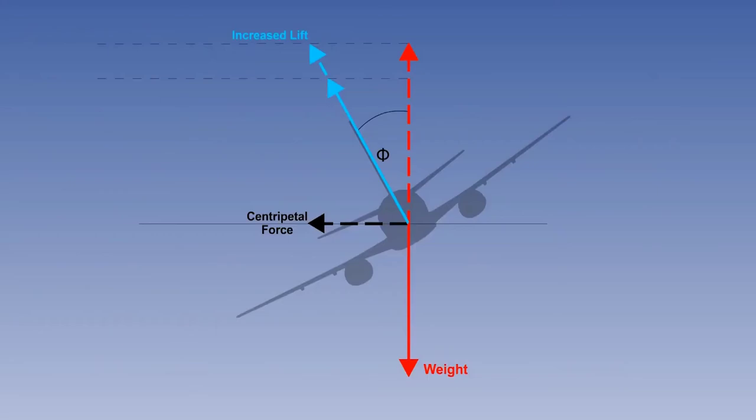As you have already seen, in a banked turn, the lift must be increased to provide not only centripetal force from the horizontal component, but also a vertical component sufficient to balance the weight.